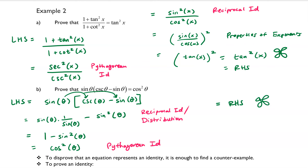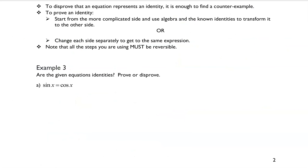That is equal to the right-hand side, so I'll put my little symbol there — that completes example 2. To disprove that an equation represents an identity, it is enough to find a single counterexample. To prove an identity, start from the more complicated side and use algebra and known identities to transform it to the other side, or change each side separately to get the same expression. Note that all steps must be reversible.